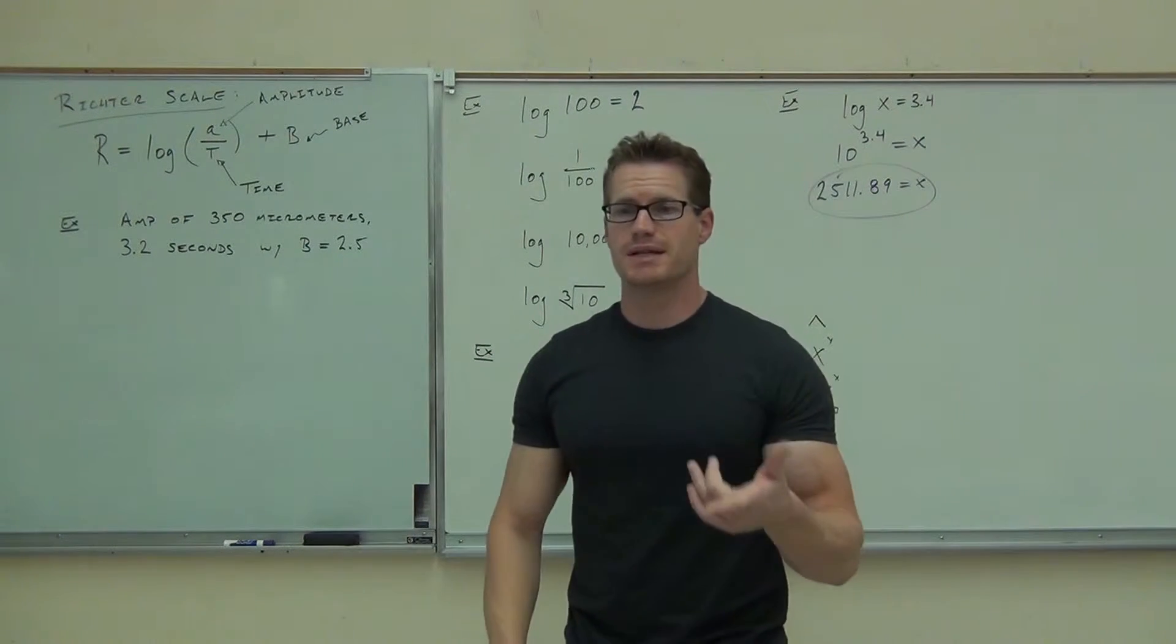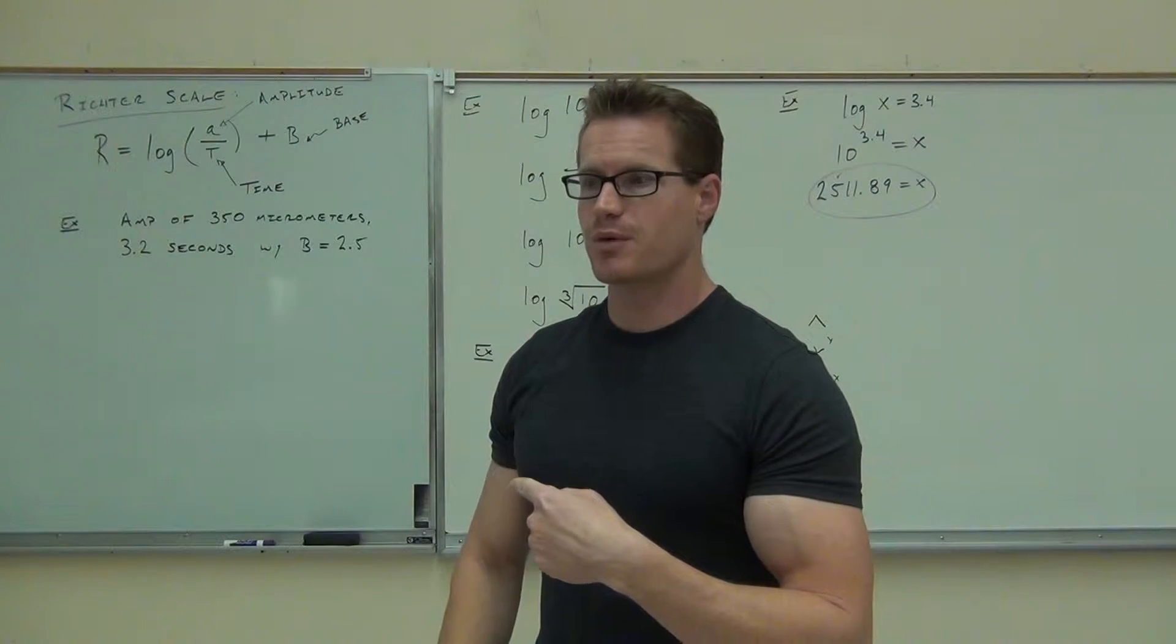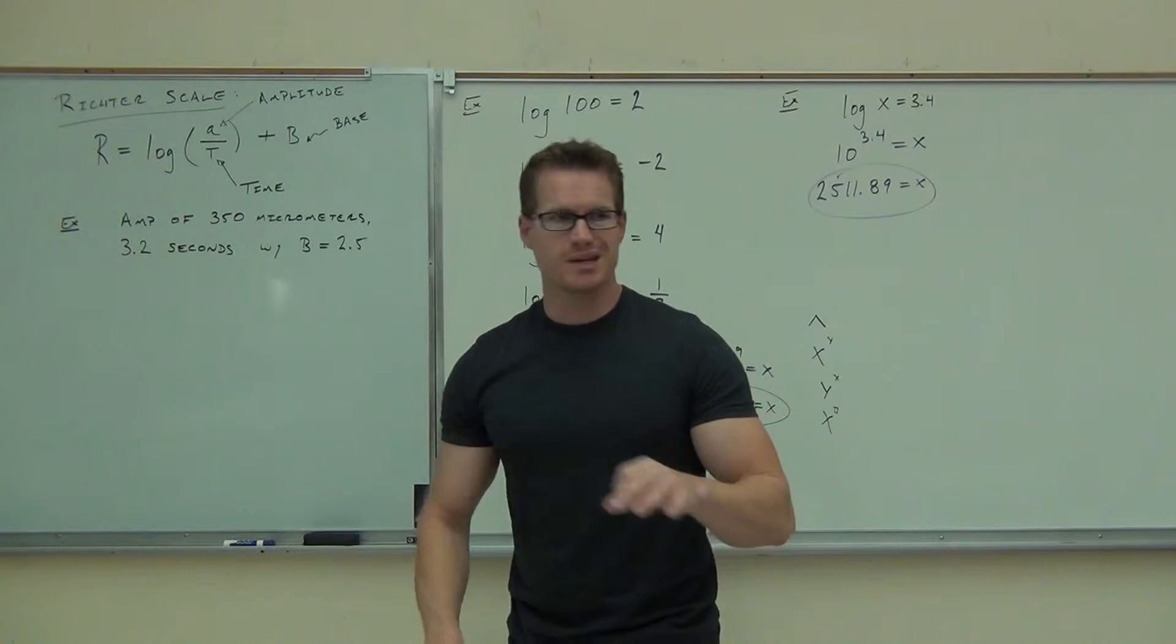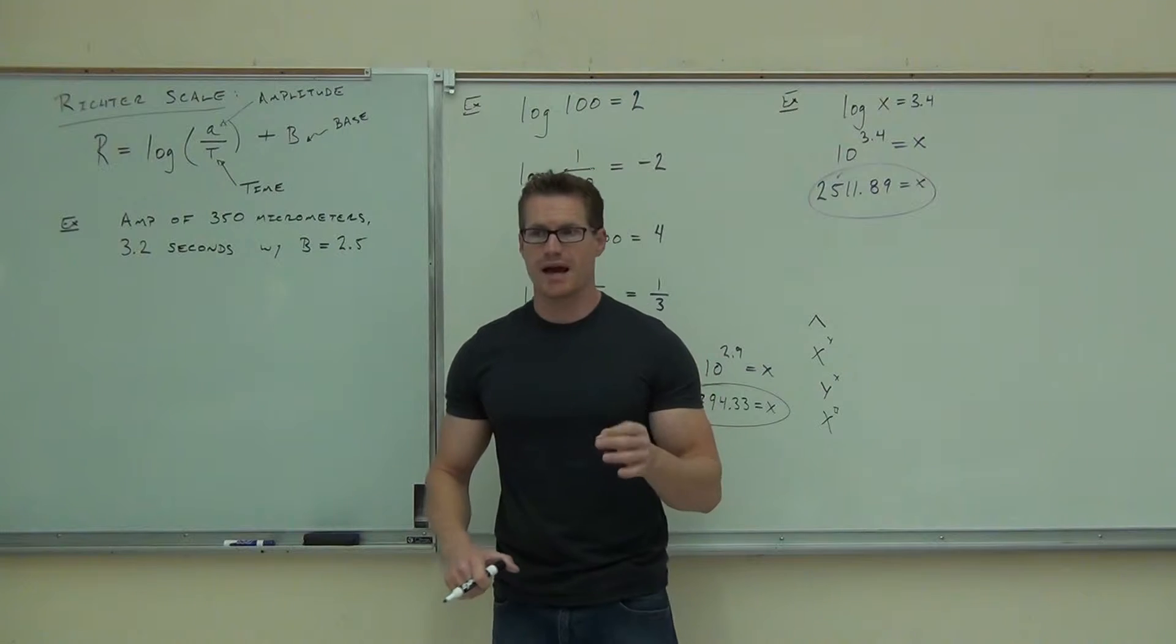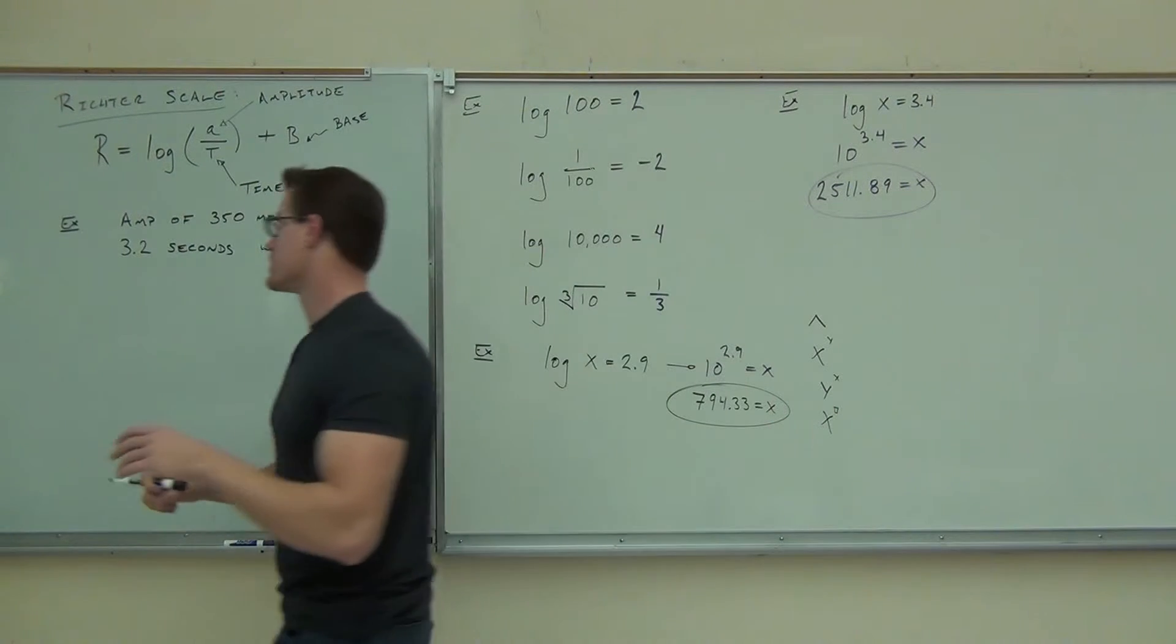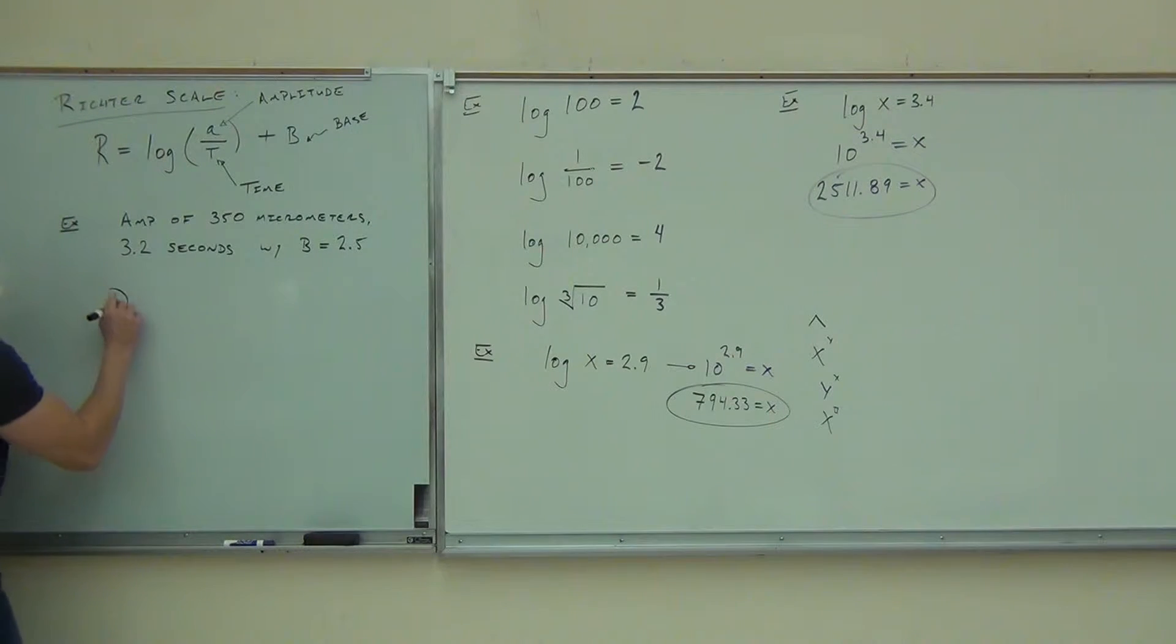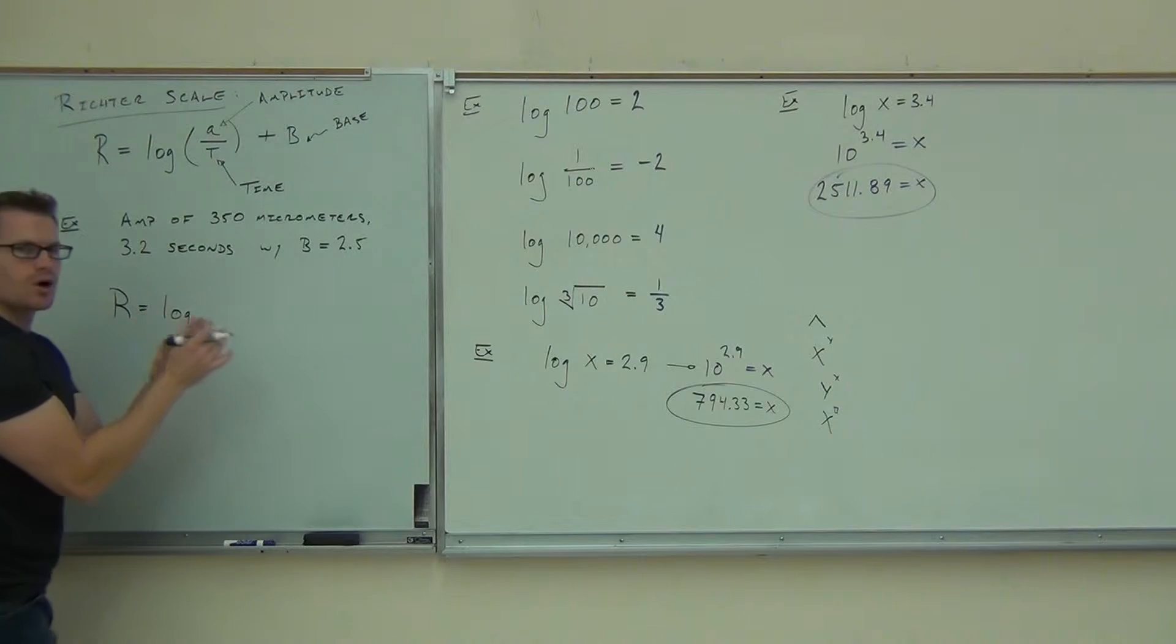First, are you able to identify all the letters up there? Can you tell me what the A is, what the T is, and what the B is? Those are the only three that we have. So let's go ahead and fill out this Richter scale reading. So the Richter scale in our case is still going to be a logarithm. That doesn't change. The base of the logarithm doesn't change.